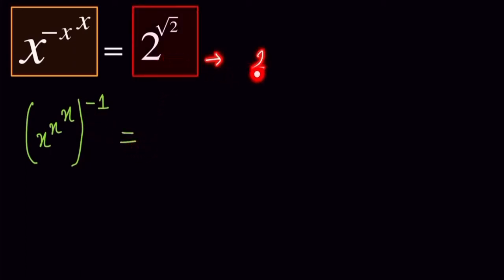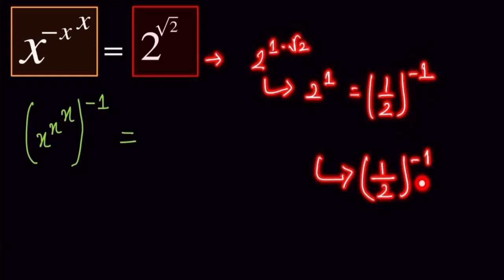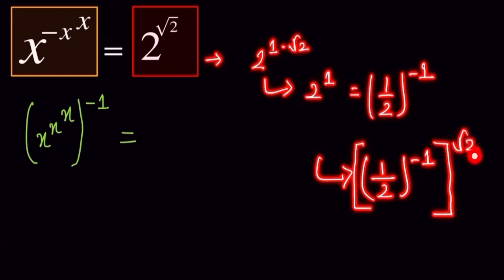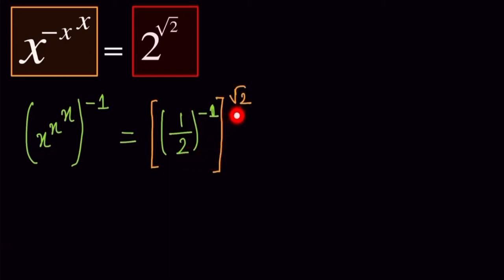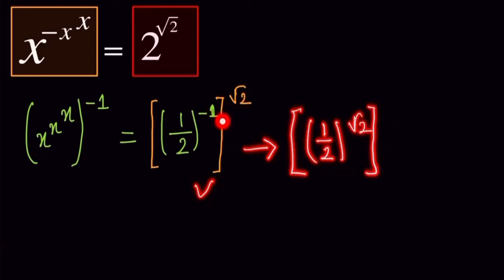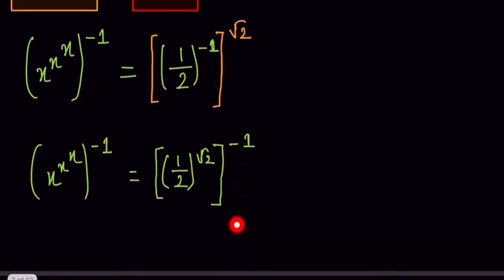Now we notice this part of the question: 2 to the power of √2. This can be written as 2^(1 · √2). We then rewrite 2^1 using a minus 1 power, making it (1/2)^(−1), so the expression becomes (1/2)^(−1) to the power of √2. We can then interchange the powers to write this as (1/2^(√2))^(−1).